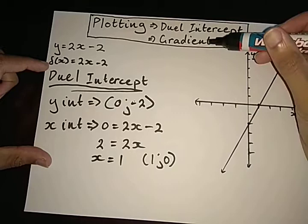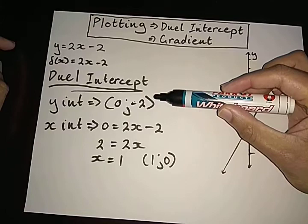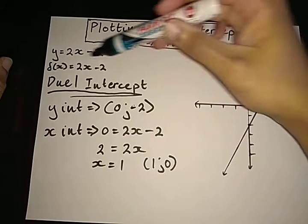The next method is known as the gradient method. And this is similar to the dual intercept method, but slightly different. For our gradient method, we're going to take the same y-intercept using the same method to find it that we did before. And we're going to go ahead and find that point. But for the gradient method, we are going to use the actual gradient of the graph. And the gradient of this graph is 2.